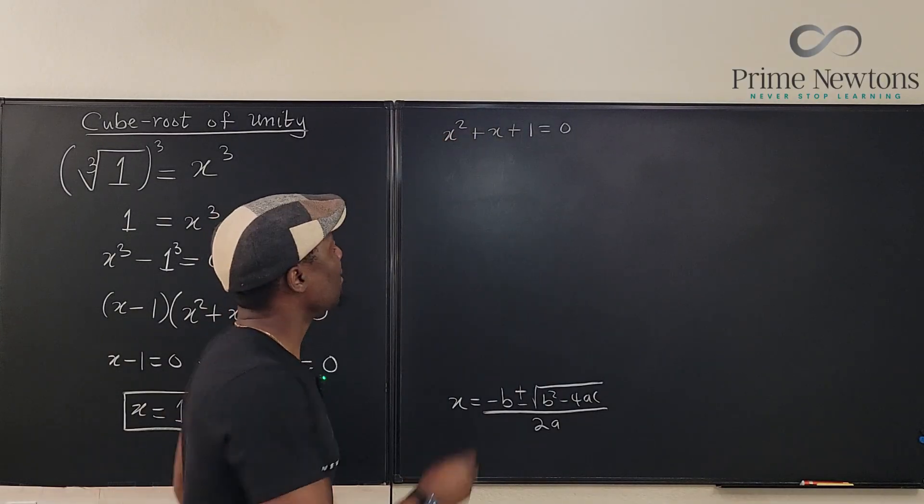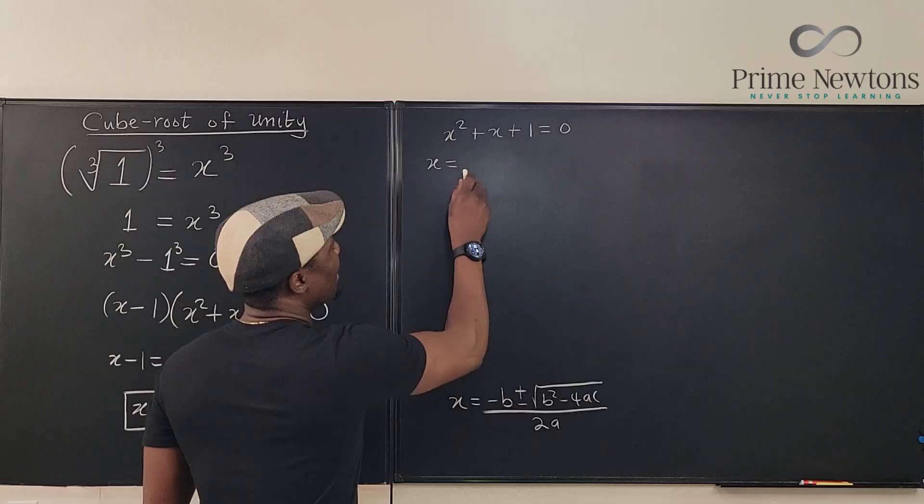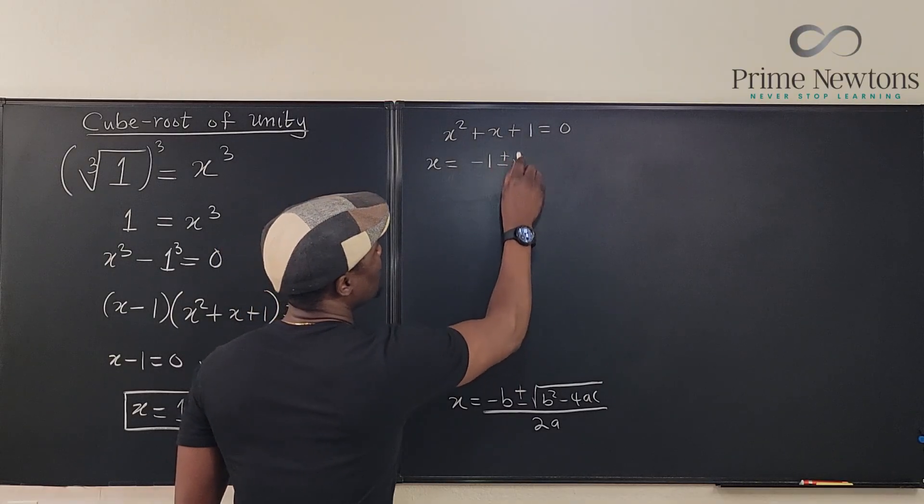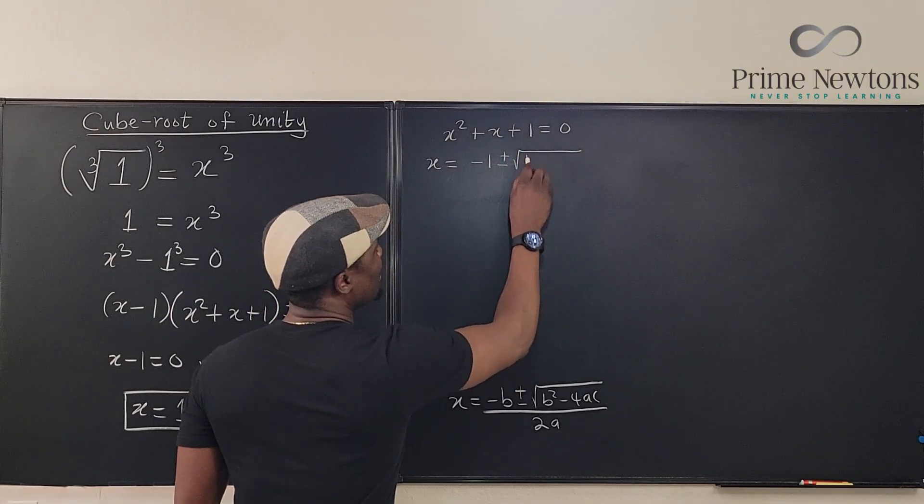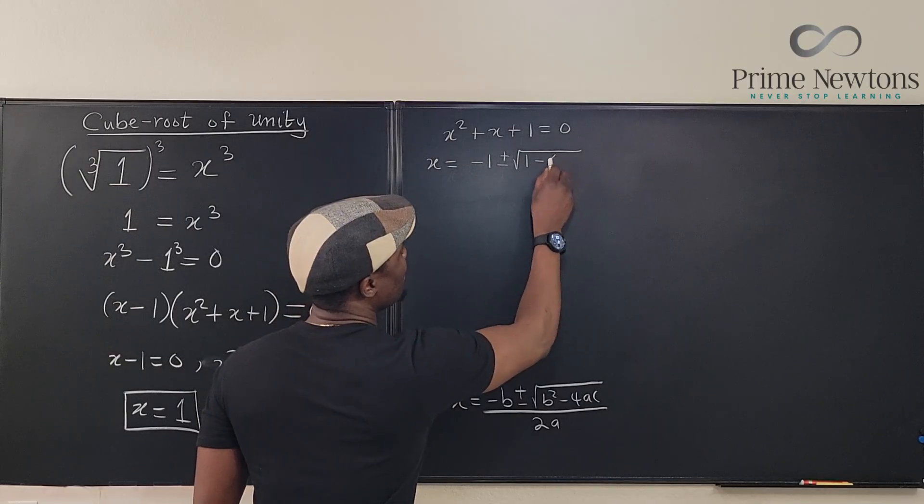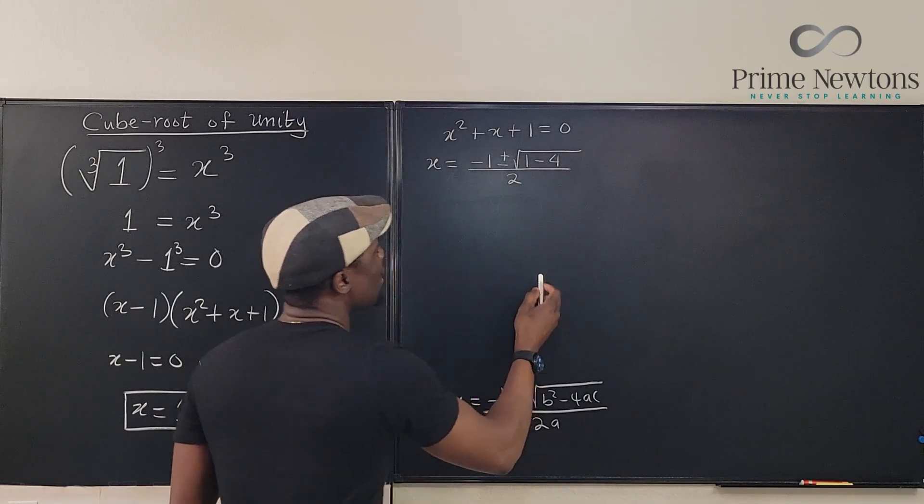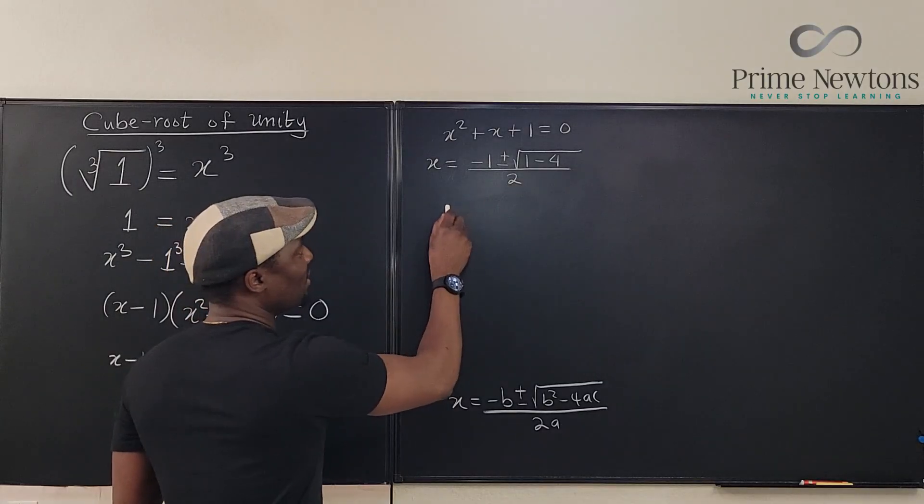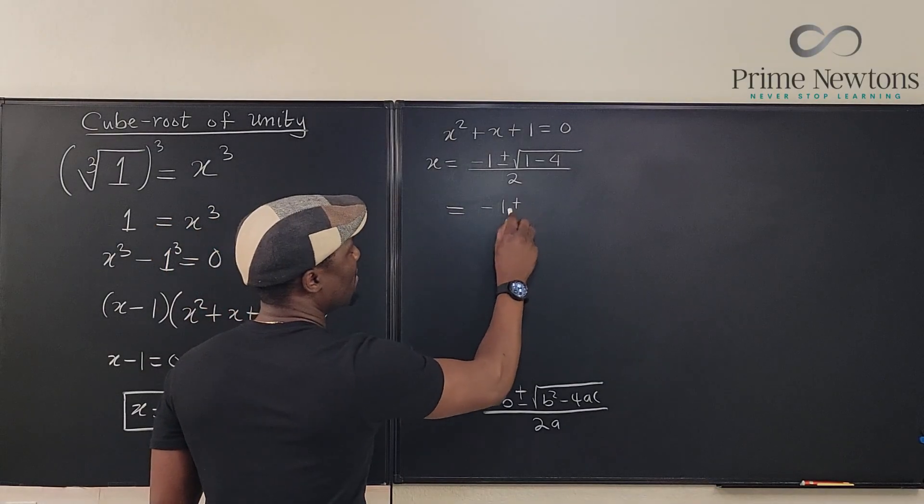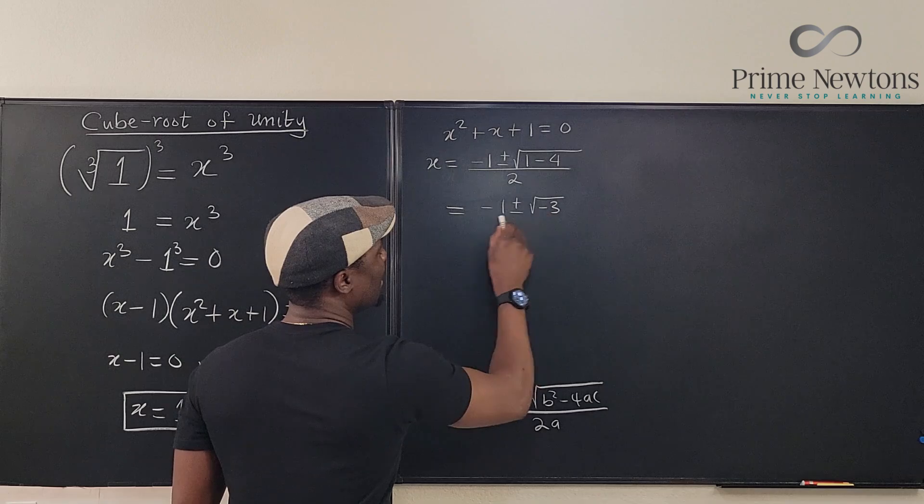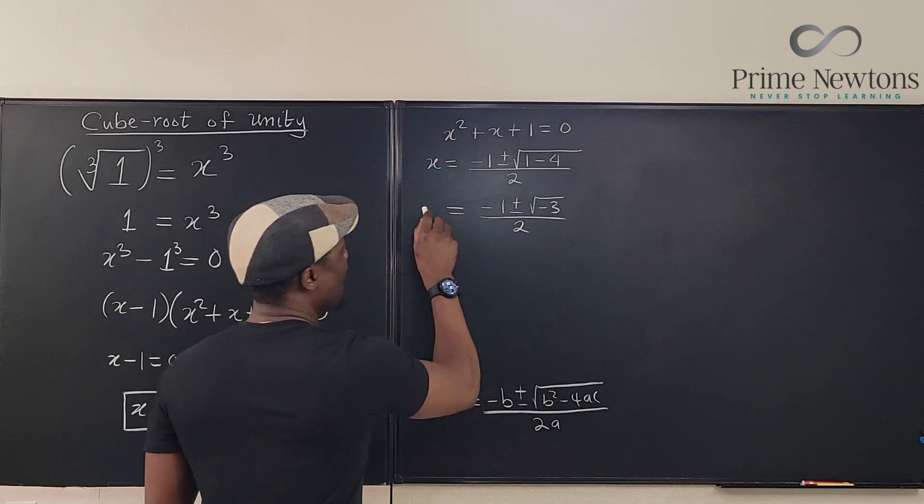So we can just say x is equal to minus 1 plus or minus the square root of b squared, which is 1 squared, minus 4ac, which is 4, all over 2 times 1, which is 2. So, it looks like what we have is just minus 1 plus or minus the square root of negative 3 over 2. That's our x.